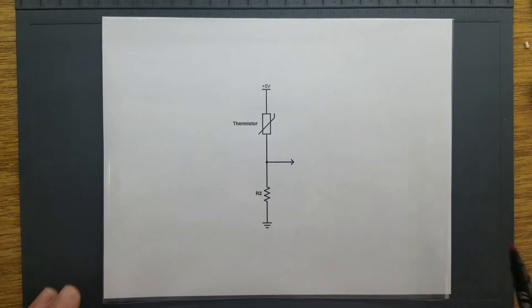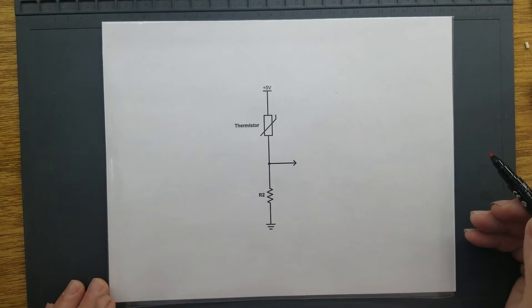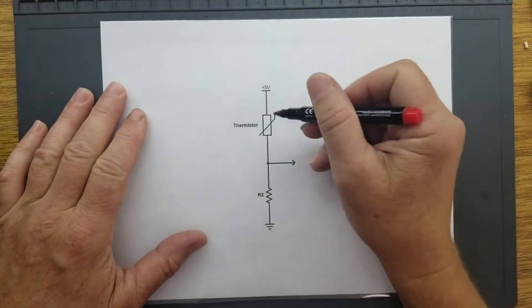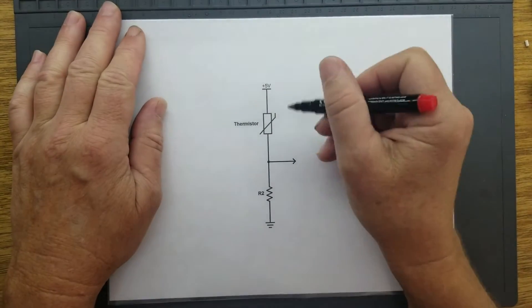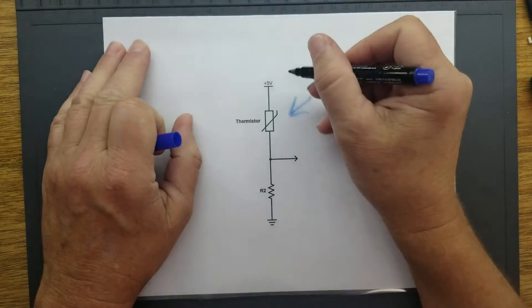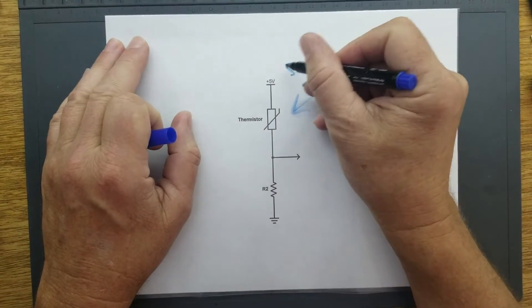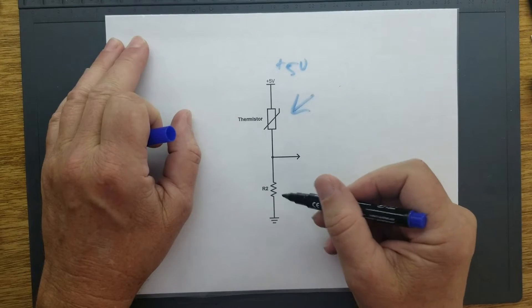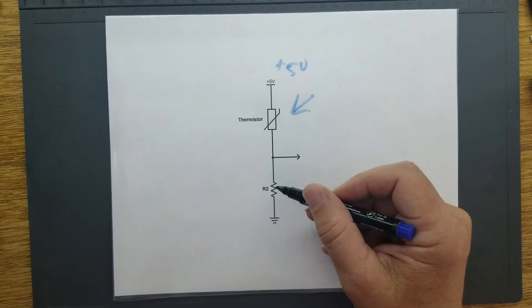This is one way in which you could connect a thermistor to a microcontroller. You would have it in what is known as a voltage divider. You would have your thermistor here. This is going to be your 5-volt supply here, and this is going to be the other resistor in the voltage divider.